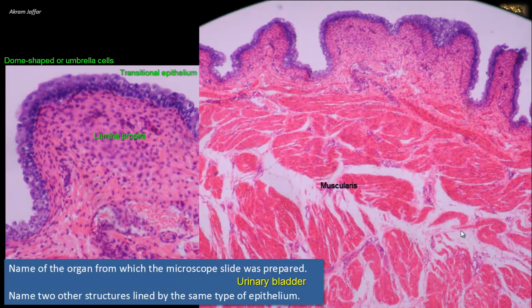As for the second part of the question, other structures lined by the same type of epithelium: all excretory urinary passages are lined by transitional epithelium, which is why it is called urothelium — exclusive to the excretory urinary passages. It begins in the minor calyces as two cell layers, and increases to as many as six or more layers in the empty bladder. It also lines the major calyx, renal pelvis, ureter, and most of the urethra, apart from the urinary bladder already described.